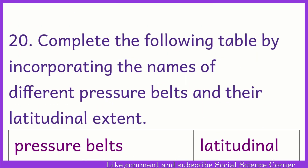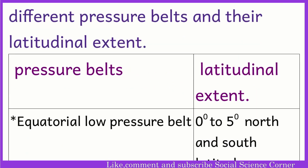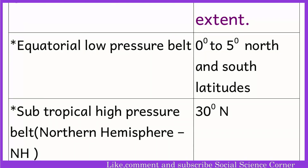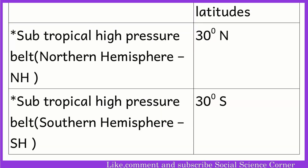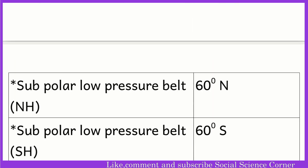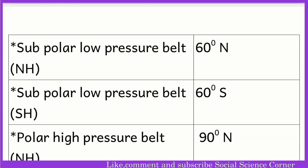The names of different pressure belts and their latitudinal extent: The equatorial low pressure belt spans 0° to 5° north and south latitudes. The subtropical high pressure belt in the Northern Hemisphere is at 30° north. The subpolar low pressure belt in the Northern Hemisphere is at 60° north.